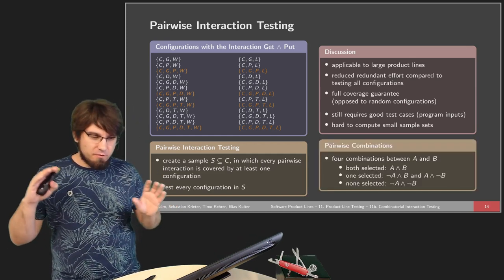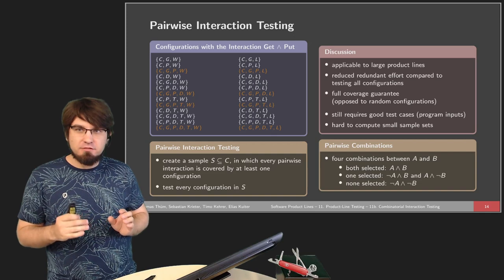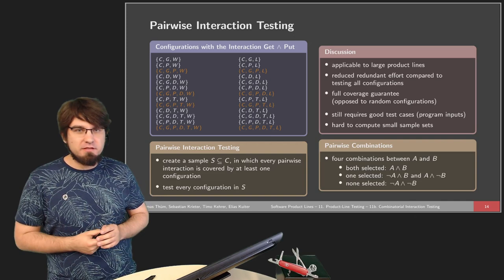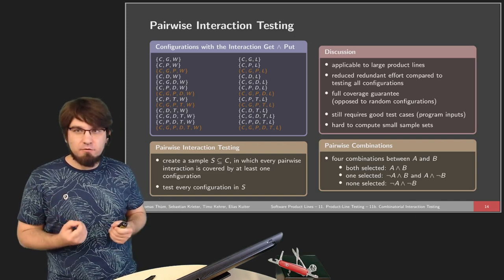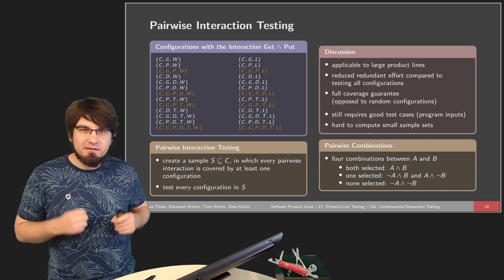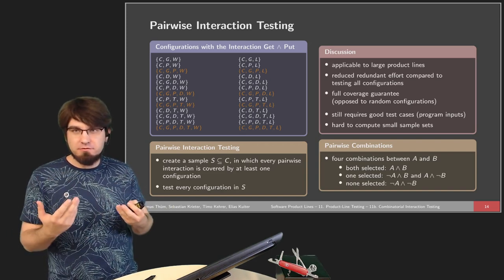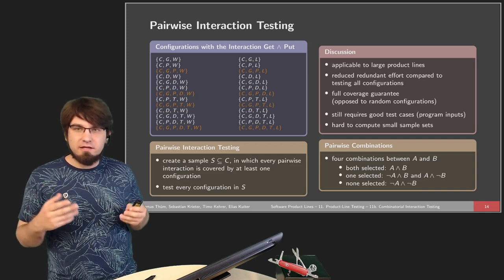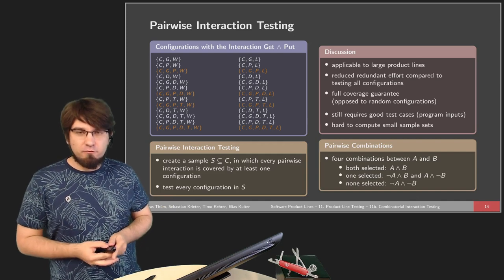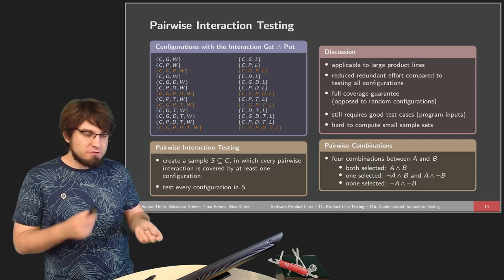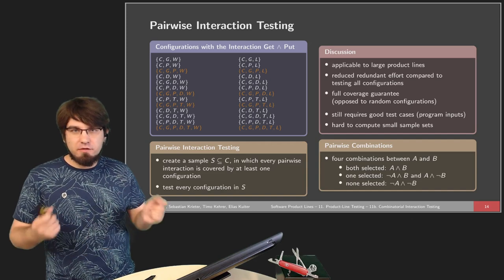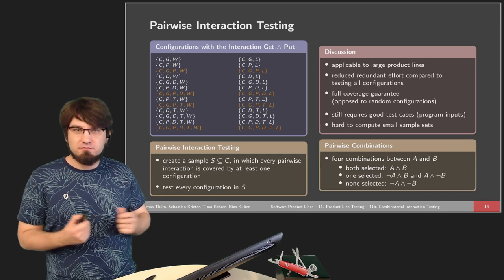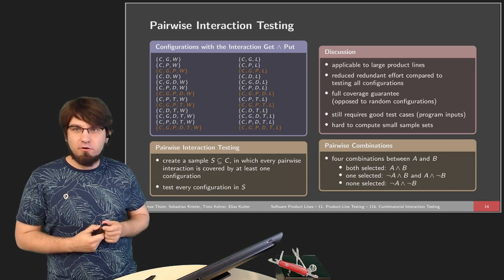When talking about feature interactions, we have to look at all different combinations between two features for pairwise interaction. For two features A and B, there are four different combinations: select both, select only A, select only B, or select neither. This gives four combinations per pair of features, and we have to do this for each pairing.